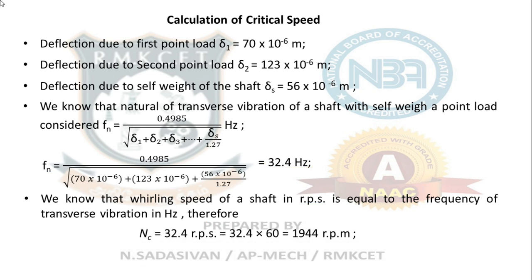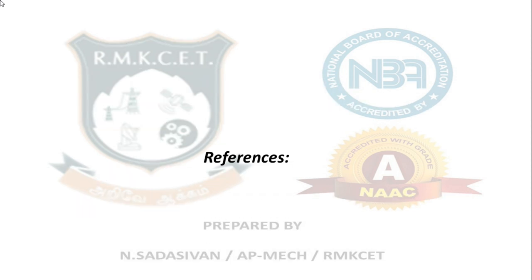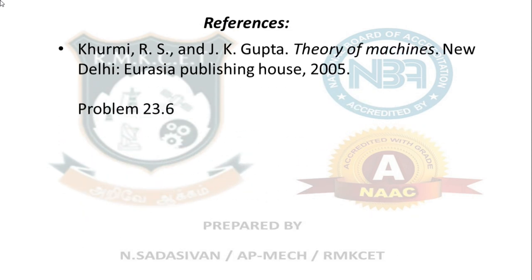Therefore, the whirling speed or critical speed of the shaft with the given loading conditions is approximately 1944 RPM. That completes the problem. This problem is taken from Kourmet textbook, problem 23.6.